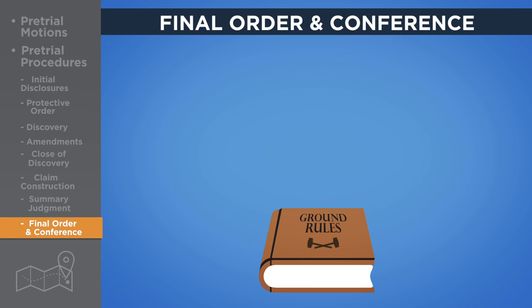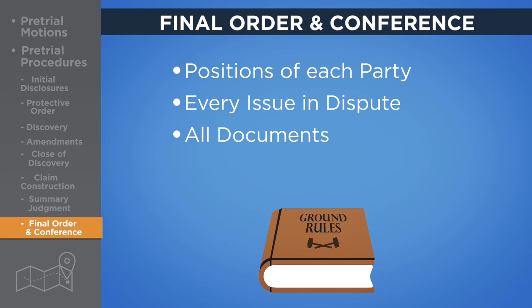Lastly, if no summary judgment is issued, the final pretrial order sets forth the ground rules for the trial. Typically, it identifies all the positions of each party, every issue and dispute in the case that must be resolved by the court or at trial, all the documents the parties may seek to introduce into evidence, and each witness expected to be called to testify, either live or via their deposition.